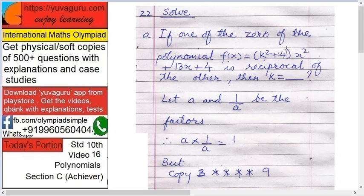So how many roots will be there for this polynomial? There will be two roots. The number of degrees equals to number of roots. So only two roots. Now what is given? One of the factors is reciprocal of the other. So let a and 1 upon a be the factors or zeros. Therefore a into 1 upon a equals to 1.